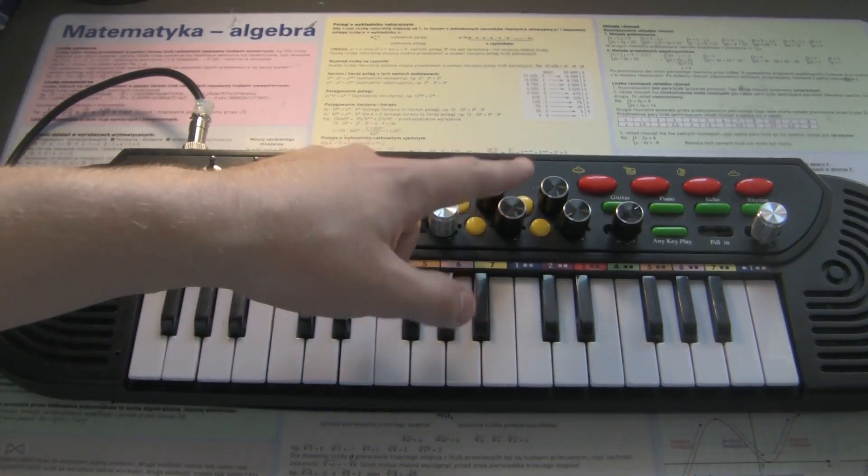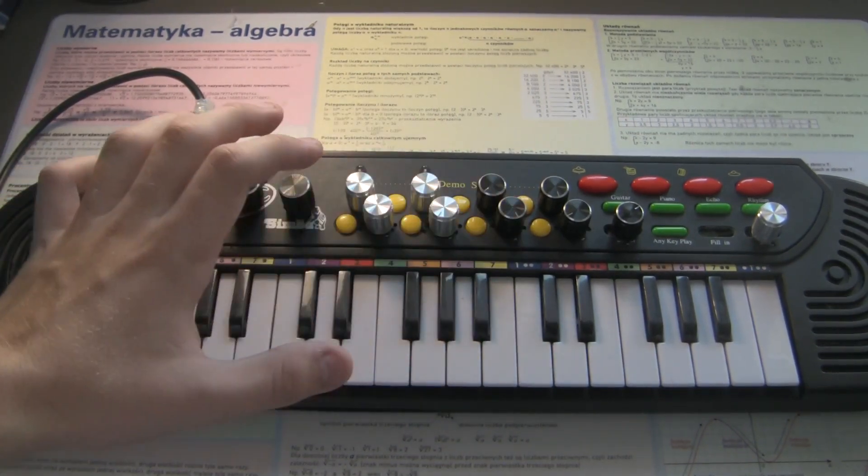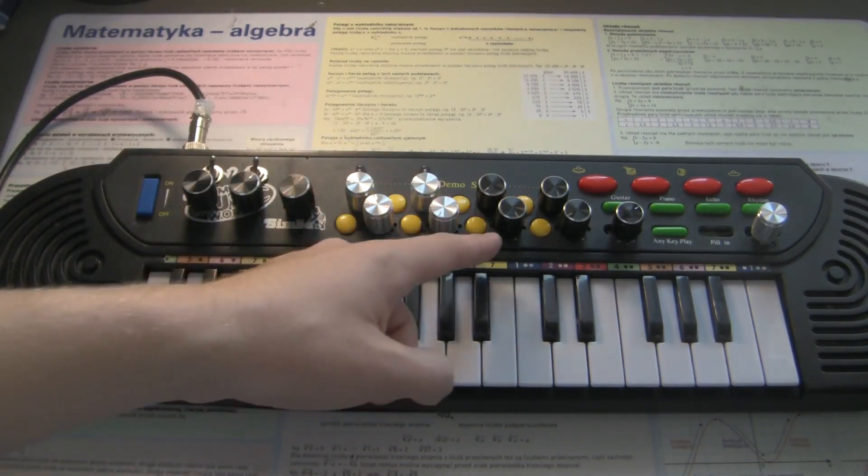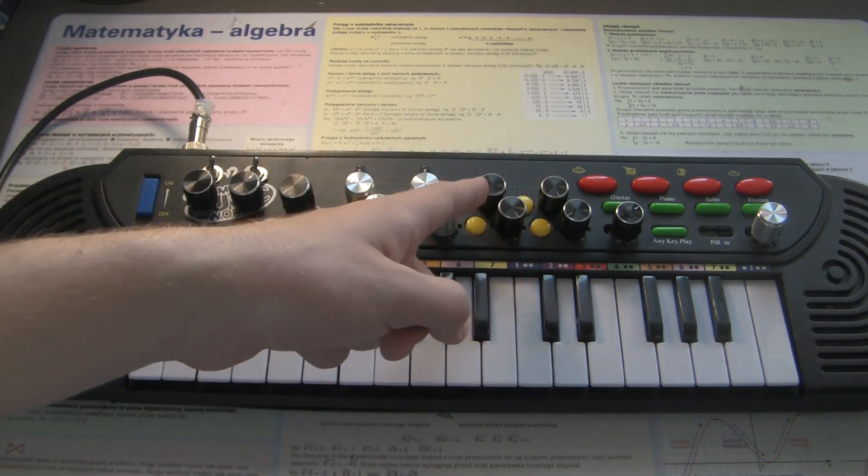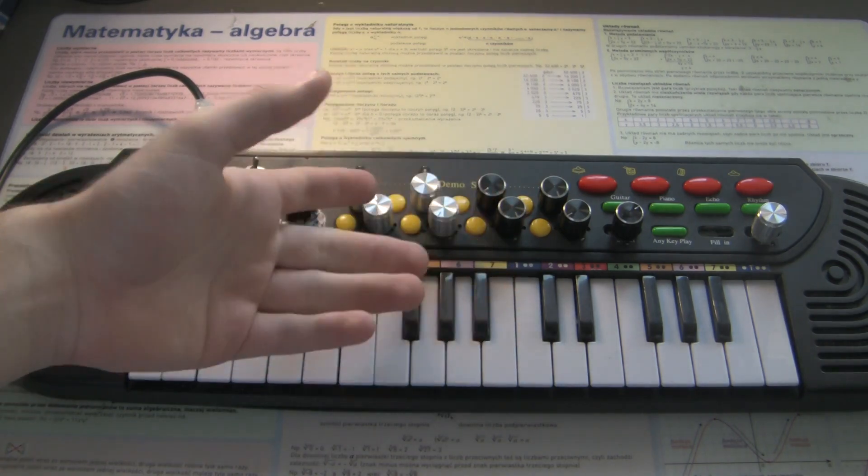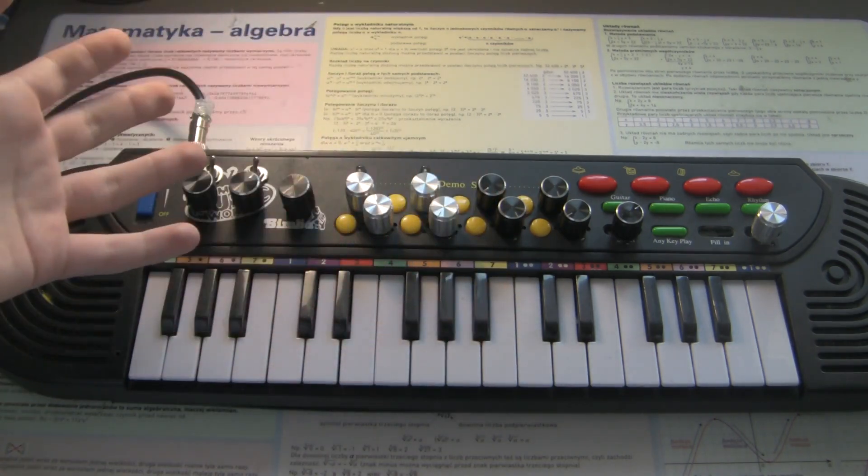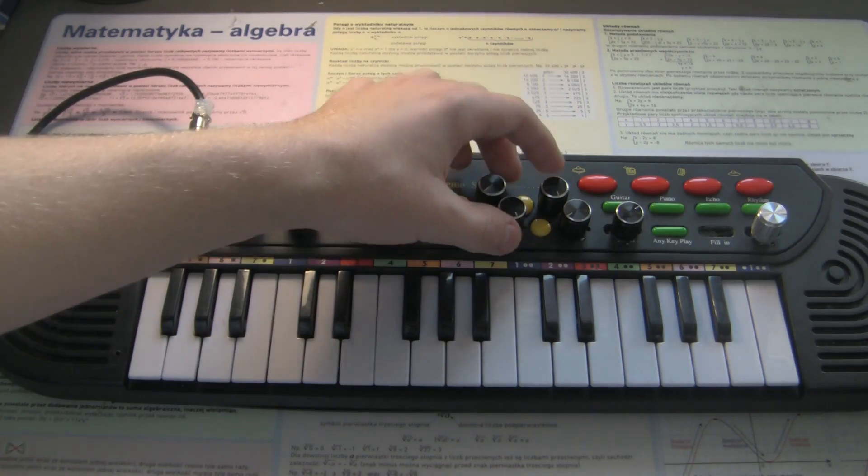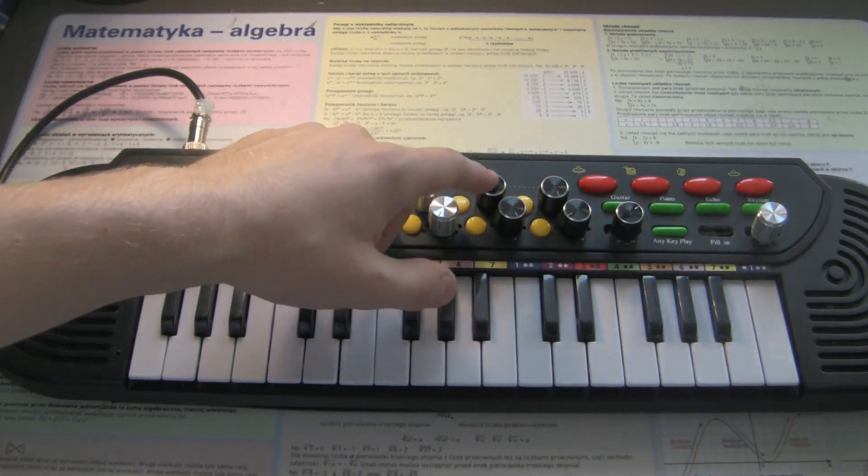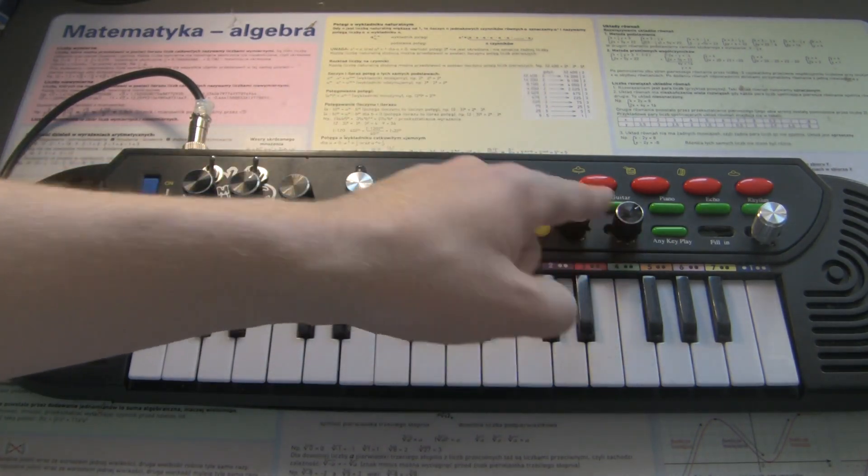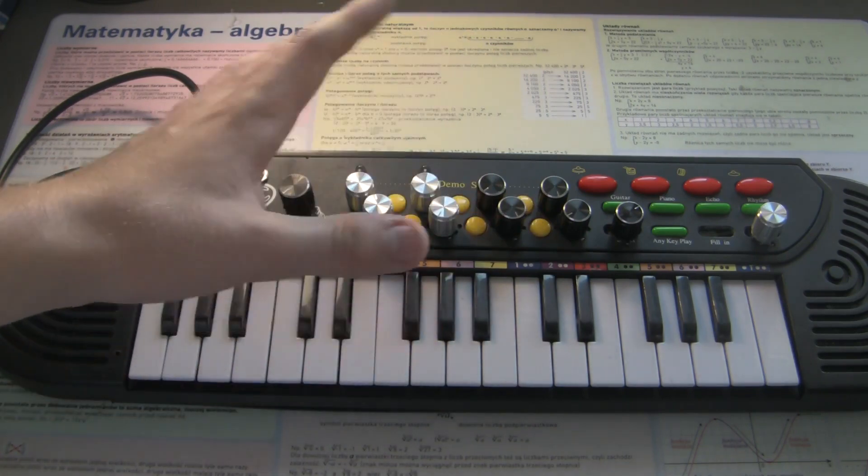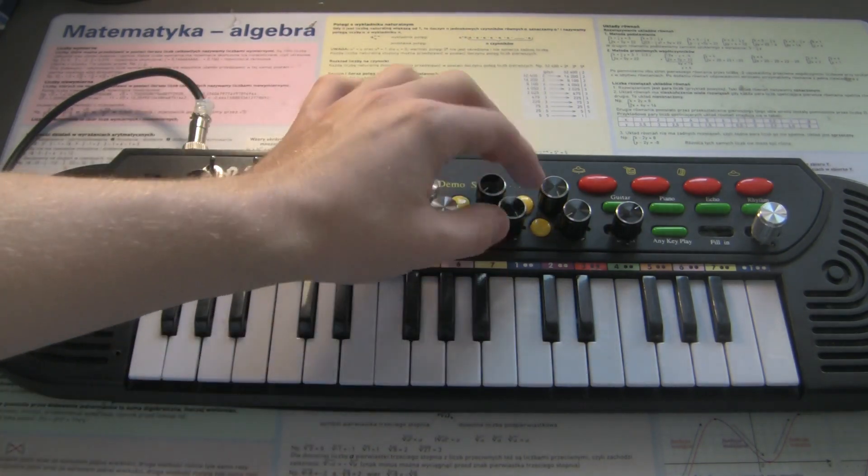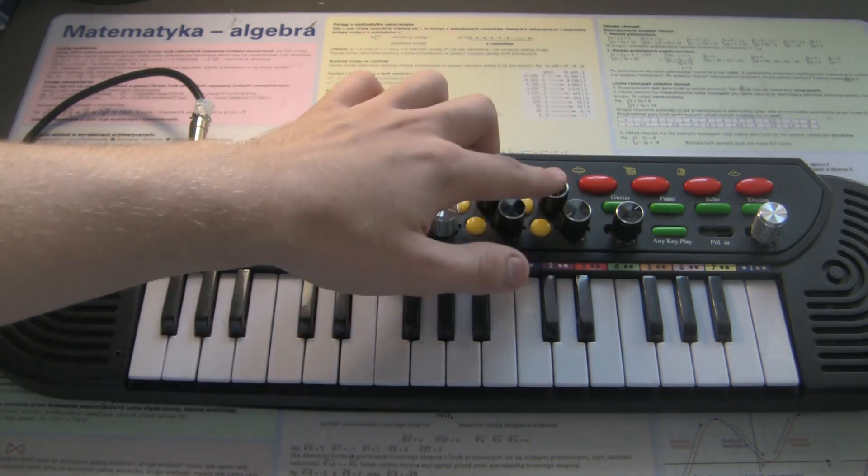The next step is the low frequency oscillator. For those of you who don't know, this oscillator does not play in the audio range. Its maximum frequency here is 20 Hz, so the lowest frequency the human ear can hear. This is only used for modulation. It has four potentiometers. This one is the pitch.